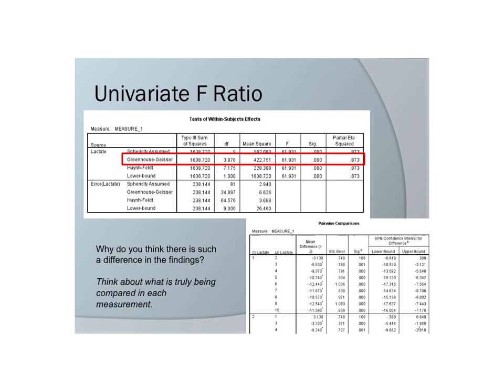Let's see what happens if we interpret the data from a univariate perspective. We saw that we violated the assumption of sphericity, so we're going to look at the Greenhouse-Geisser line, which is slightly more conservative than Huynh-Feldt, with lower bound being extremely conservative. We have a very high F-ratio of 61, a p-value less than .001, and a huge partial eta-squared at 87%.